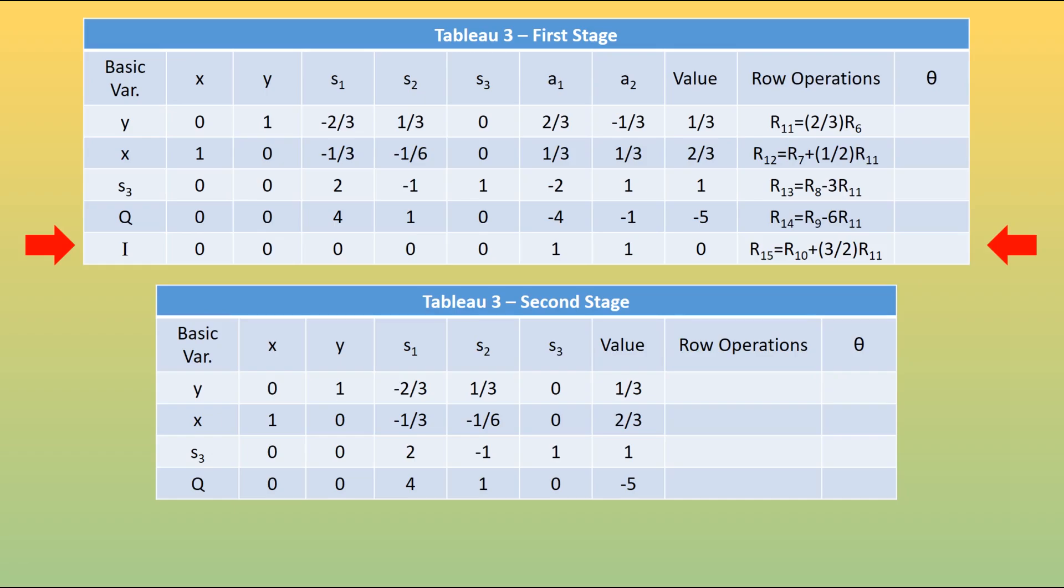Ordinarily, of course, you will need to apply it several times. Here we have our optimal solution there. We have the maximum of Q is minus 5, but remember that this means that P is the negative of that, so we have 5. Our initial problem was about P. And we have x being 2/3 and y being 1/3, with s3 taking up the slack, being 1.